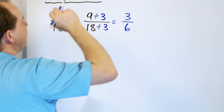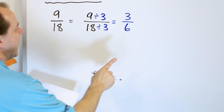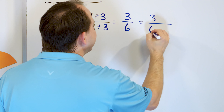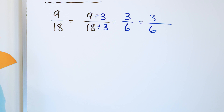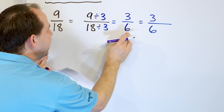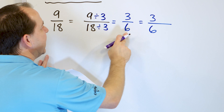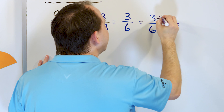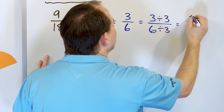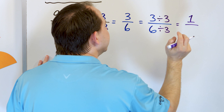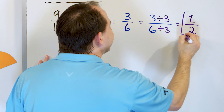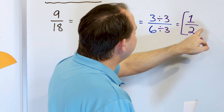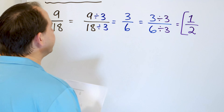Now I'm going to circle this answer, but then I notice — wait, I can further simplify three-sixths. I can divide it by three again. Three divided by three is one, and six divided by three is two. So the answer is finally one-half, because I cannot simplify or divide this any further. It took two steps — step one, then step two.